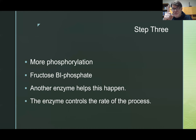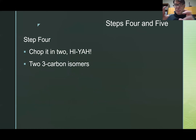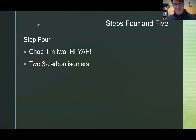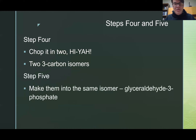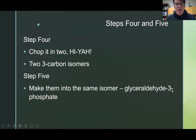So: step one, add phosphate; step two, isomerize; step three, more phosphate; steps four and five, chop it in two — hi-ya! — which leaves us with two isomers that are three carbon. We had six carbon — glucose, fructose — C6, and hi-ya! Now we have two C3 fragments. Step five uses an isomerase to make both isomers the same. They end up as glyceraldehyde-3-phosphate, meaning the phosphate is on the third carbon.